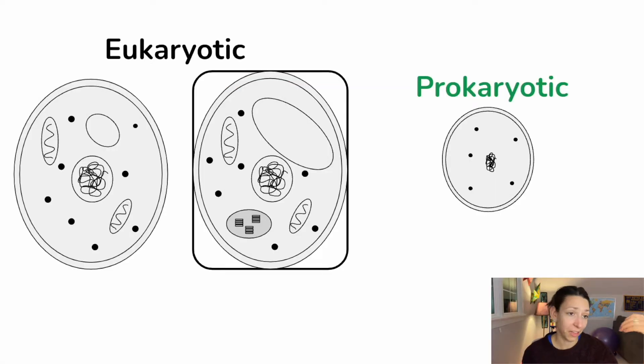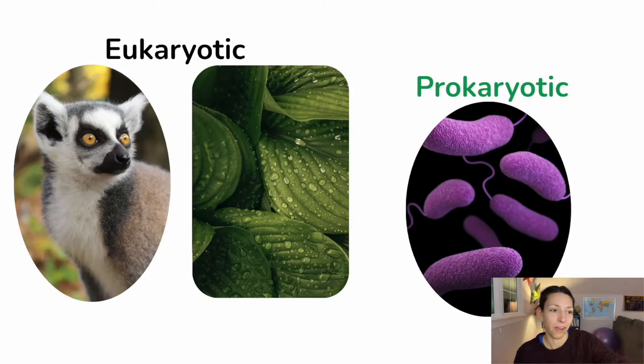Now remember, all cells, whether eukaryotic or prokaryotic, will have a cell membrane, that phospholipid bilayer. Some eukaryotic organisms and some prokaryotic organisms may also have a cell wall that is an extra layer of protection and support that surrounds the cell membrane. But all cells, no matter what they are, even if they do have a cell wall, do have a membrane as well.